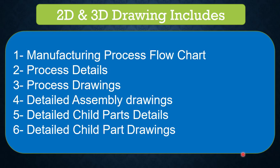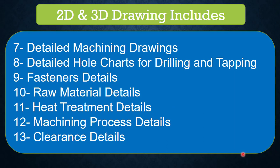The processes include blanking, draw, trim, pierce, flange, and others. Number five, detailed child part details — we need to cover each and every child part for manufacturing to get the die assembly. Every part detail is required for manufacturing, whether it is a small part or a bigger part; without a drawing we cannot achieve the required accuracy level. Number seven, detailed machining drawings — each and every die undergoes multiple machining processes, so important drawings are needed for specific machining operations.